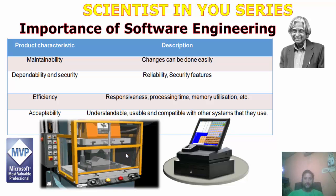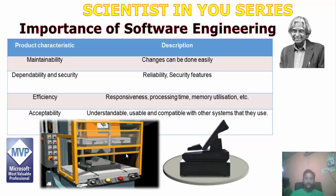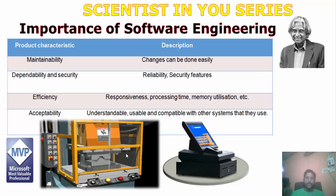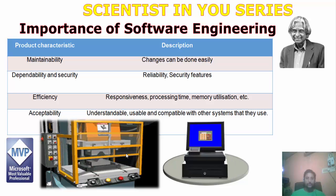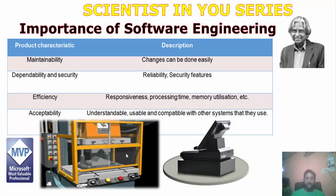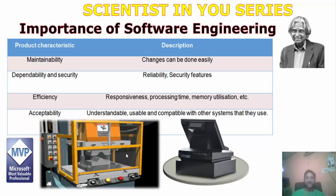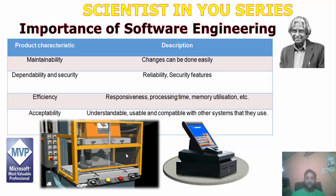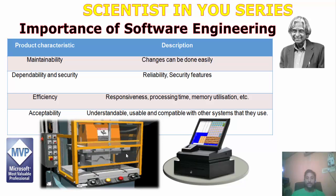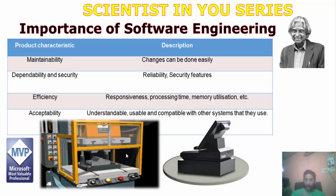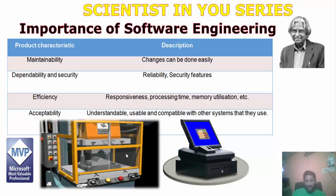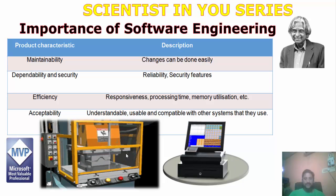If we talk about the importance of software engineering, these are the key areas to focus on. First, maintainability — we are able to maintain it, and if we need any changes we can do it immediately. Second, dependability and security — how we maintain security, for example an invalid user should not be able to log in. Third, efficiency — responsiveness time, processing time, memory utilization. And fourth, acceptability — the software should be in an understandable format, so when you click the login page and go to the next page, you should understand what is there.